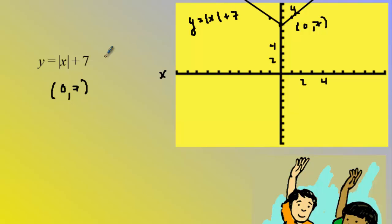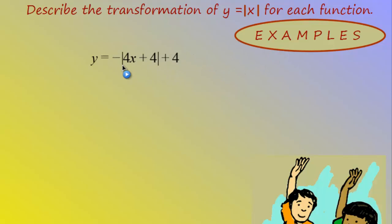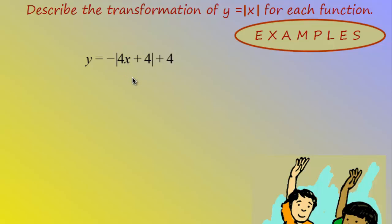I hope that was helpful. Remember the main thing here is that one scenario where you have a coefficient inside the absolute value: you need to divide both terms by that coefficient so the x coefficient is one, in order to actually see what the horizontal translation is.